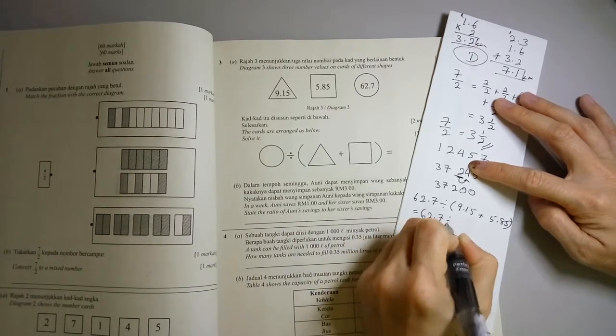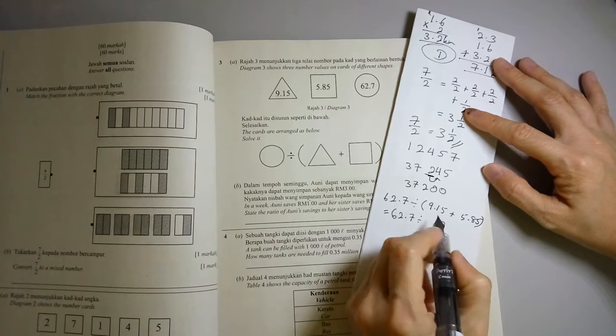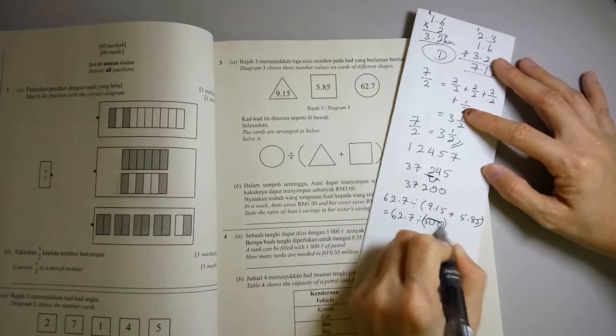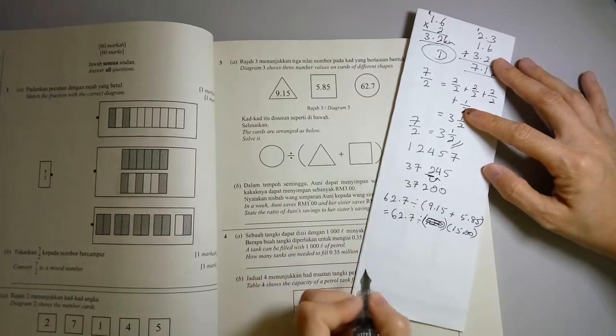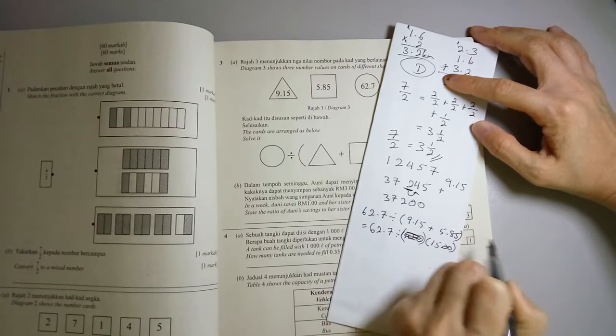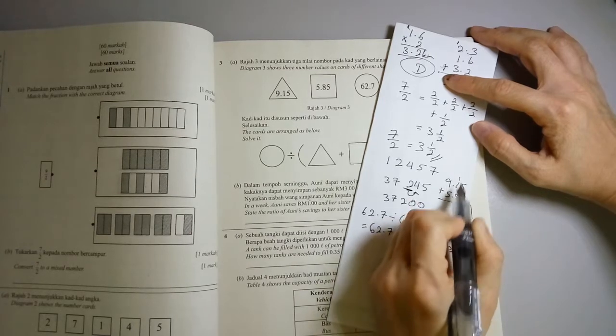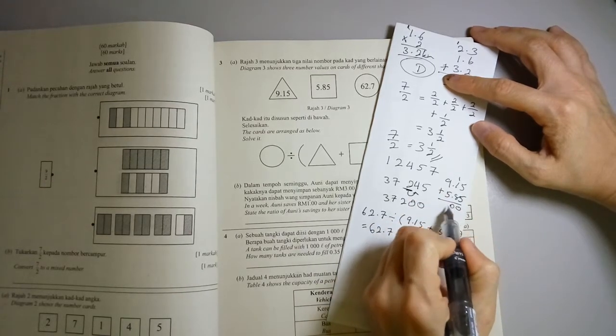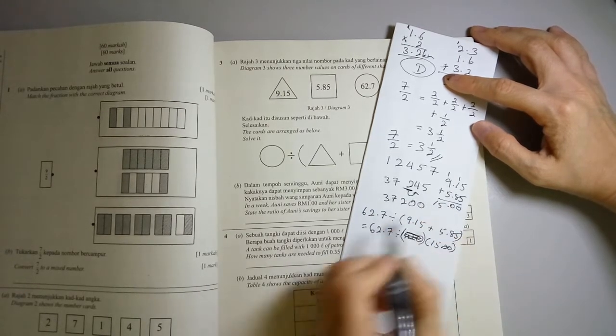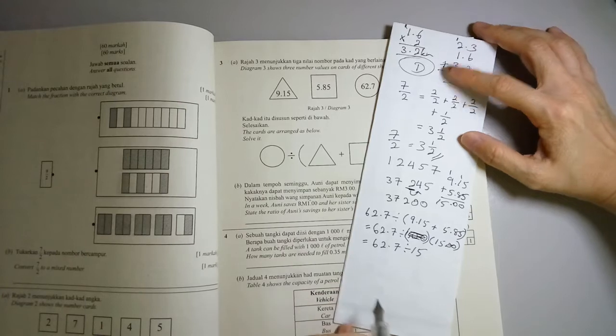62.7 divided by, 9.15 plus 5.85 would be, let's see. Let's try it again. 9.15 plus 5.85. 5 plus 5 is 0. Add 1 here. 1 plus 1 is 2. 2 plus 8 is 0. Remember to add 1 here. 1 plus 9 is 10. 10 plus 5 is 15. Yes, it's 15. So this equals to 62.7 divided by 15.